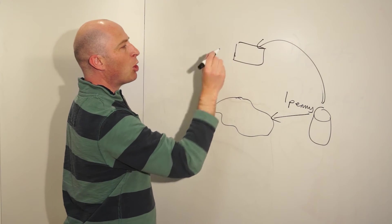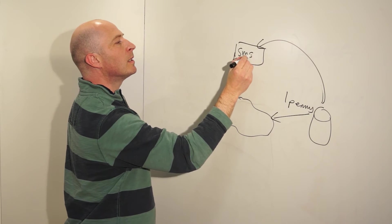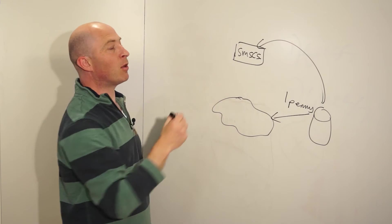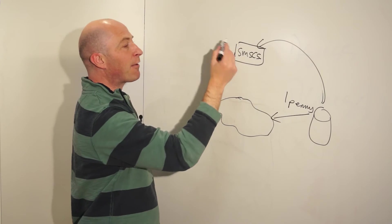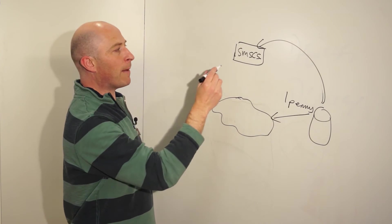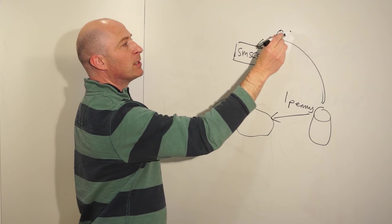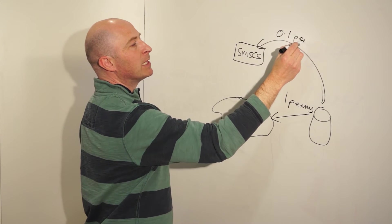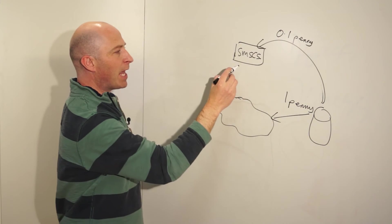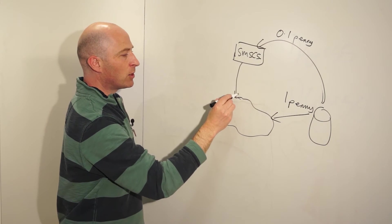There are things called open SMSCs which are located often in foreign countries like Africa. These are very, very cheap. They might only cost 0.1 pennies per message, and they send these messages into the operator.